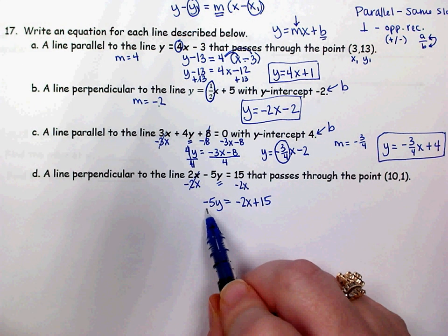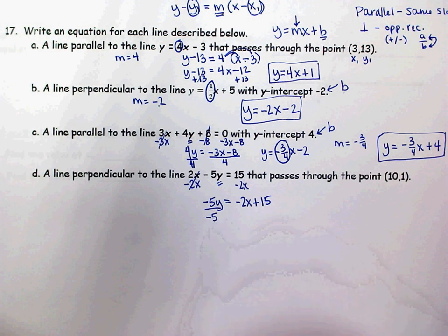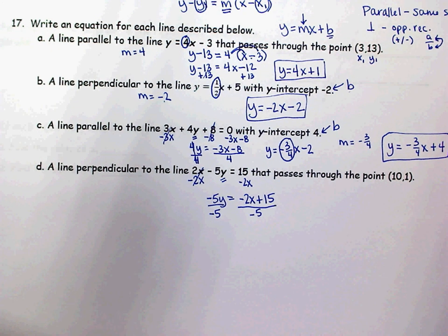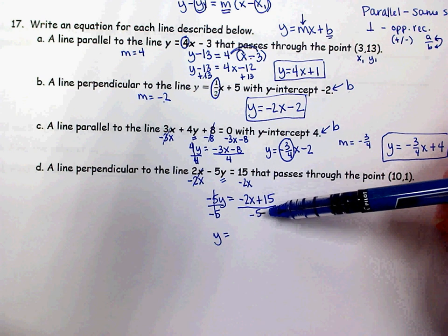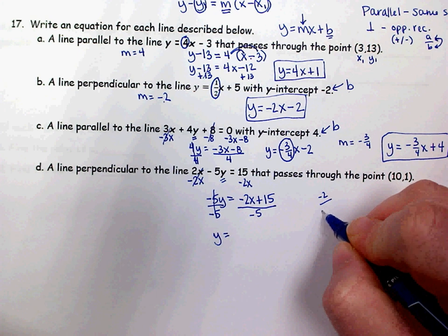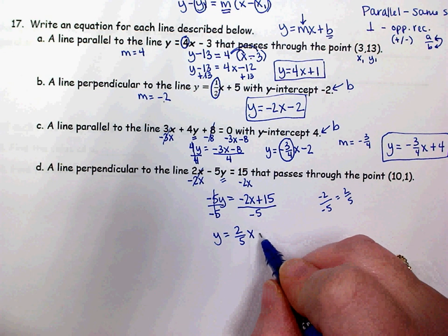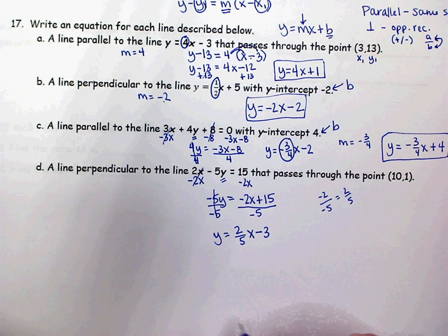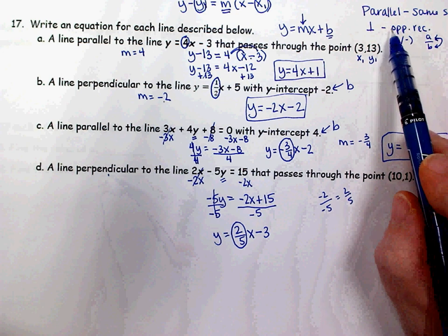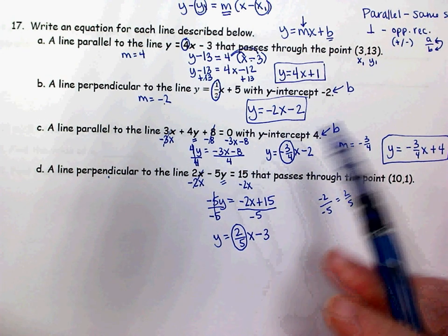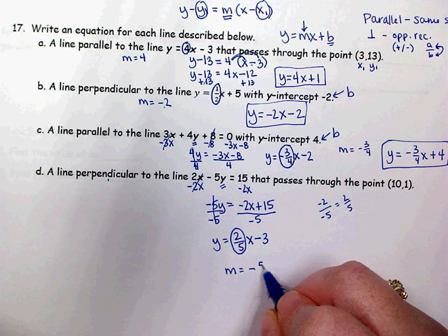Don't add 5 to both sides — this is multiplication between negative 5 and y, so divide by negative 5 on both sides. Now y is by itself. The number in front of x is the slope: negative 2 divided by negative 5, and a negative divided by a negative is positive, so that simplifies to 2/5 x. The y-intercept is 15 divided by negative 5, which is negative 3. The slope of this line is 2/5. To be perpendicular, I need the opposite reciprocal of 2/5: it's positive so my slope needs to be negative, and flipping the fraction gives 5/2, so my perpendicular slope is negative 5/2.